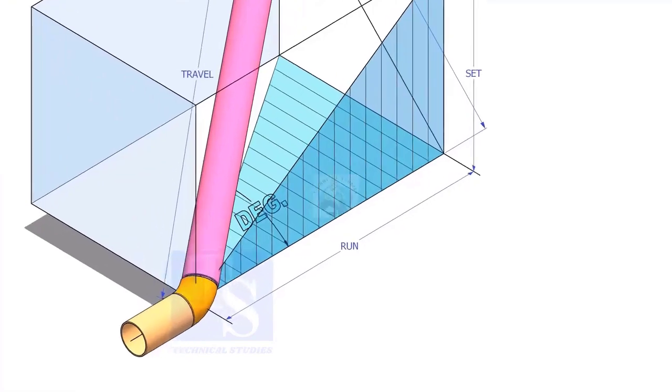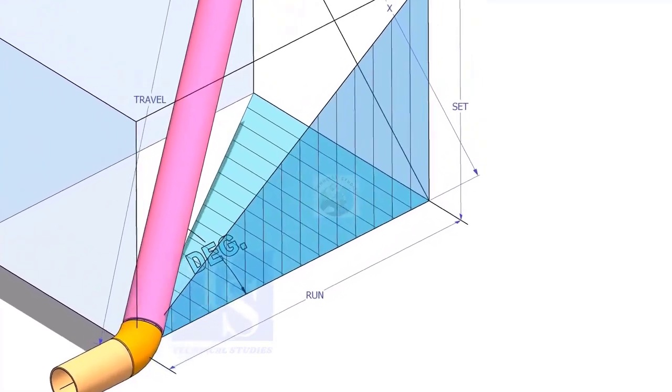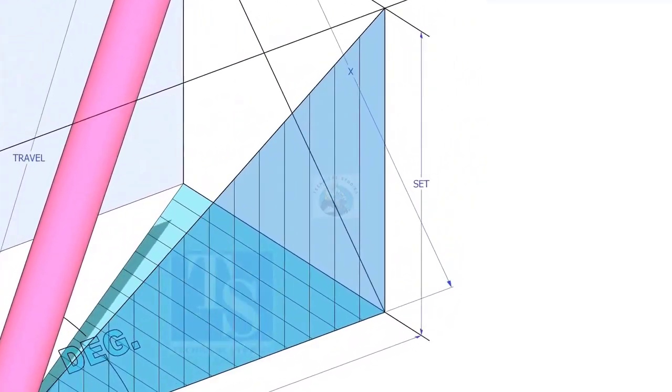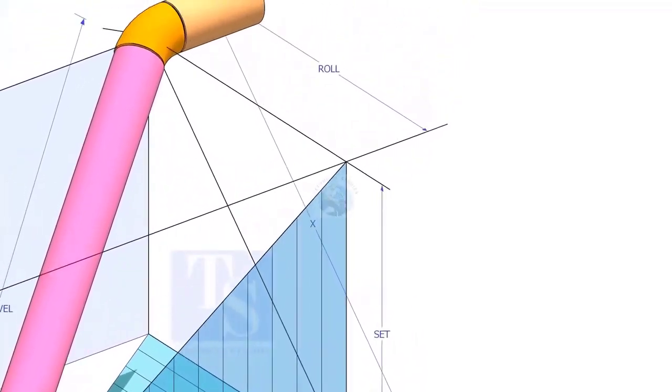In this video, I will show you how to calculate the travel length and the including angle of a double rolled offset pipe.